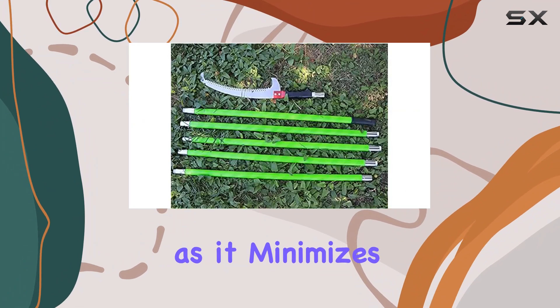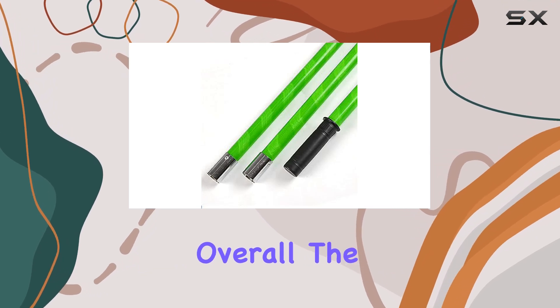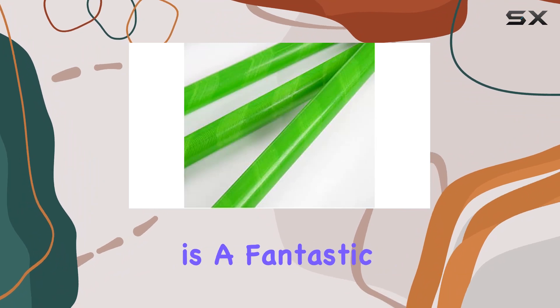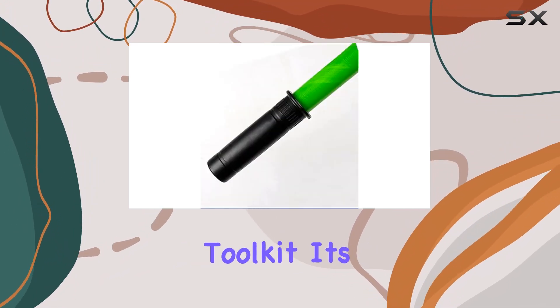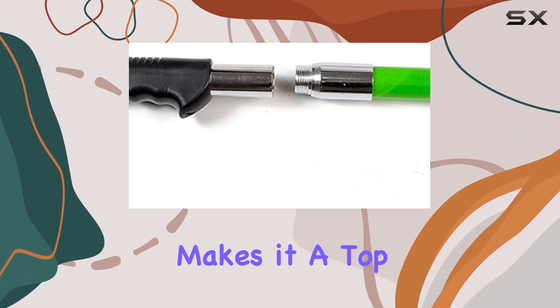Overall, the 26-foot manual pruner cutter tree trimmer pole extension is a fantastic addition to any gardener's toolkit. Its combination of reach, material quality, and battery power convenience makes it a top choice for anyone looking to maintain their garden with ease and precision.